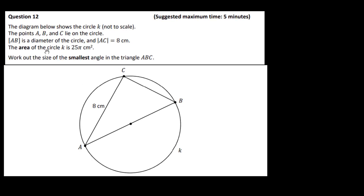Let's see, we have a diagram below which shows a circle K which is not to scale. The points A, B and C lie on the circle. AB is the diameter of the circle and AC is 8. The area of the circle is 25 pi centimeters squared. Work out the size of the smallest angle in the triangle ABC. Okay, so we're told this is not to scale so just because this angle looks smaller doesn't necessarily mean that it is, it could be this one here. We don't know the length of this side here because as I say it's not to scale. So, what I'm going to do here, they give us an extra bit of information here, they give us the area of the circle.